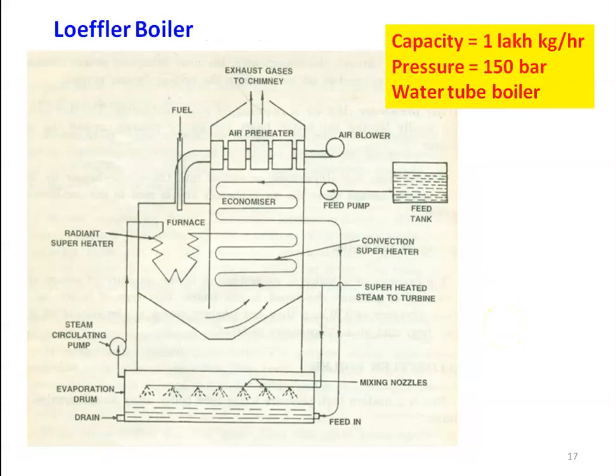The next is the Loeffler boiler. It is also a water tube boiler of higher capacity — 1 lakh kilograms per hour with a pressure of 150 bar. Take a few seconds and look at the construction of the Loeffler boiler.